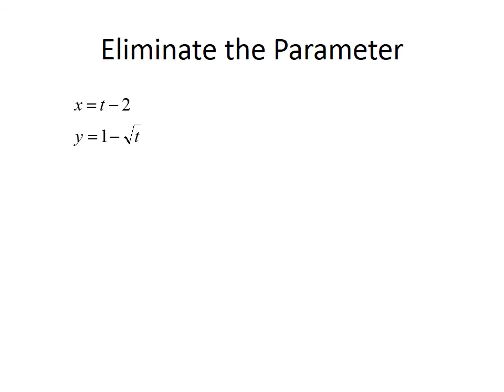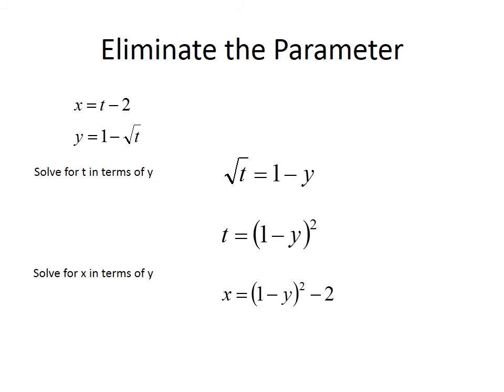In problem 2, I know just from experience that this is going to give me a sideways parabola. So I'm going to solve for t in terms of y. I'm also doing that because I want to get rid of that square root of t. So I'm going to solve for t in terms of y. So that means I'm going to subtract 1 from both sides, divide by negative 1, and then square both sides. Then I'm going to replace that value of t in for x. Now, this produces a sideways parabola with the vertex at negative 2, 1, I think. And it's going to open to the left because that y is negative.